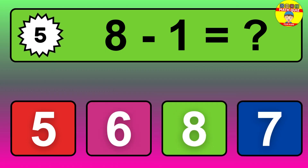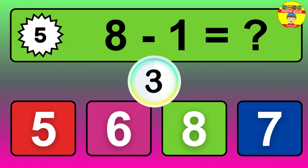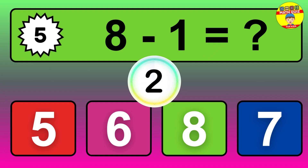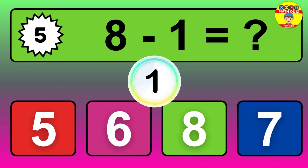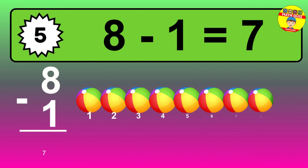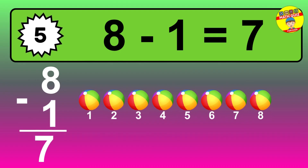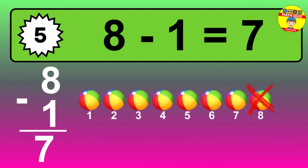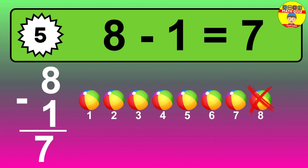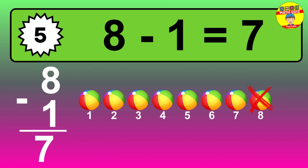Question 5. 8 minus 1 equals what? The answer is 8 minus 1 is 7. Let's count it: 1, 2, 3, 4, 5, 6, 7.